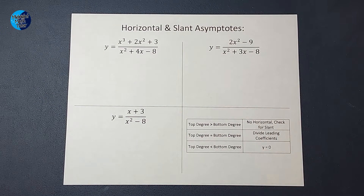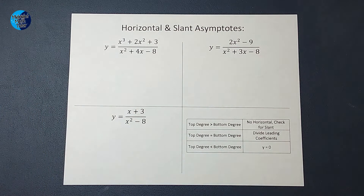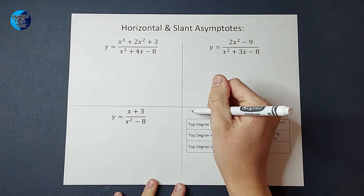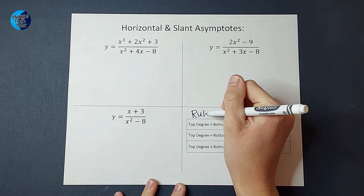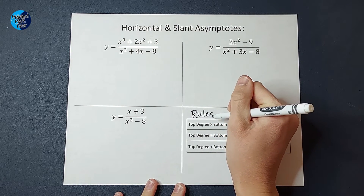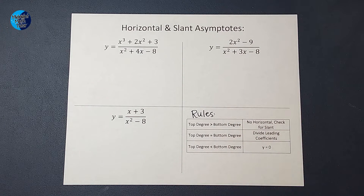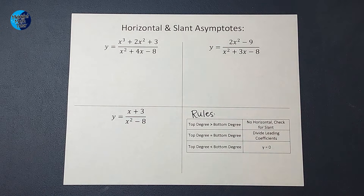Hey guys, if you have been graphing rational functions, I'm willing to bet you have been finding horizontal and slant asymptotes. And if you've been doing that, you've probably been told this set of rules. We love rules in math — just tell me what to do and I'll do it. But at some point you might start to wonder where did those rules come from? Why do they work? Good for you if you've thought that.